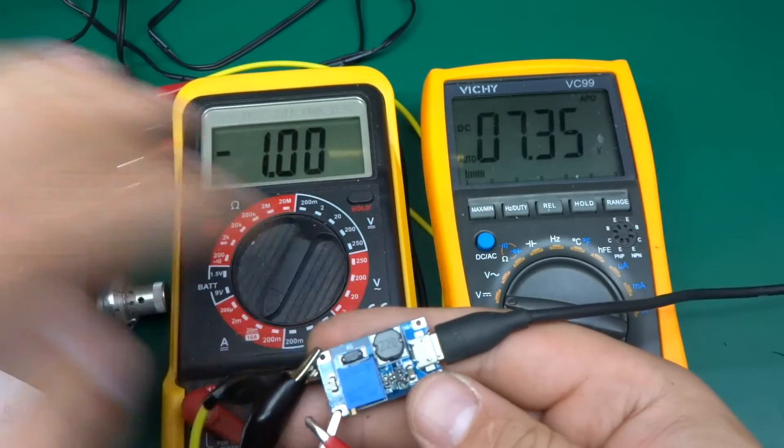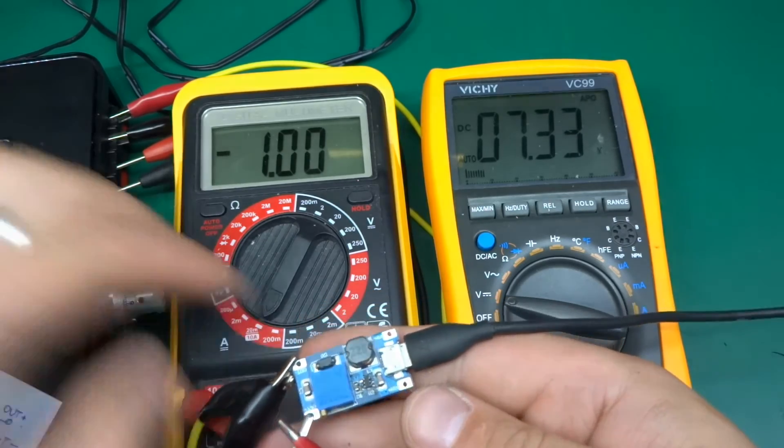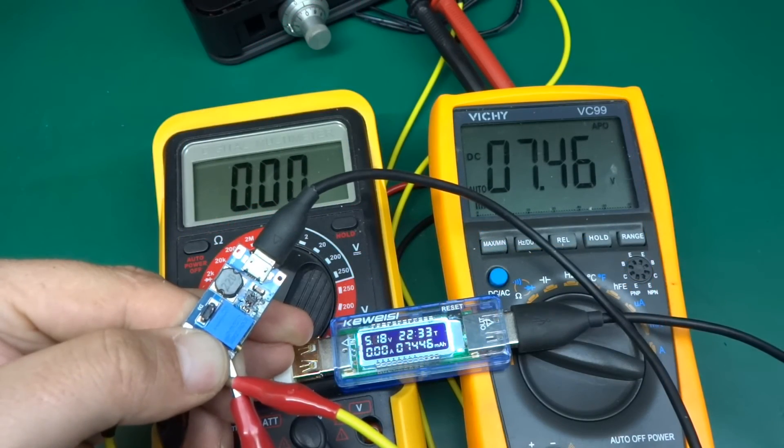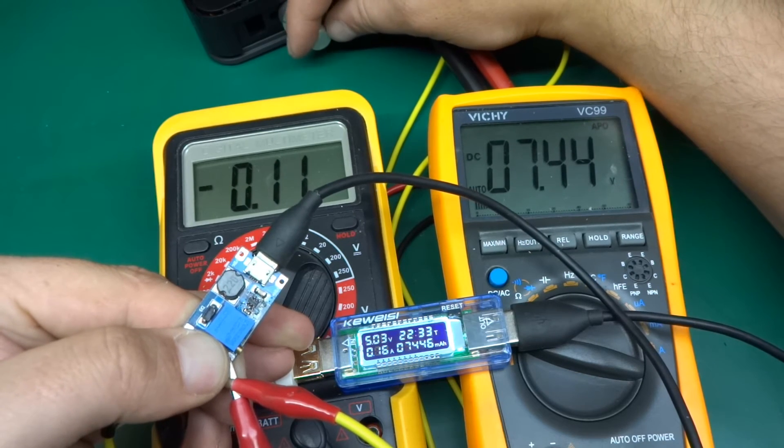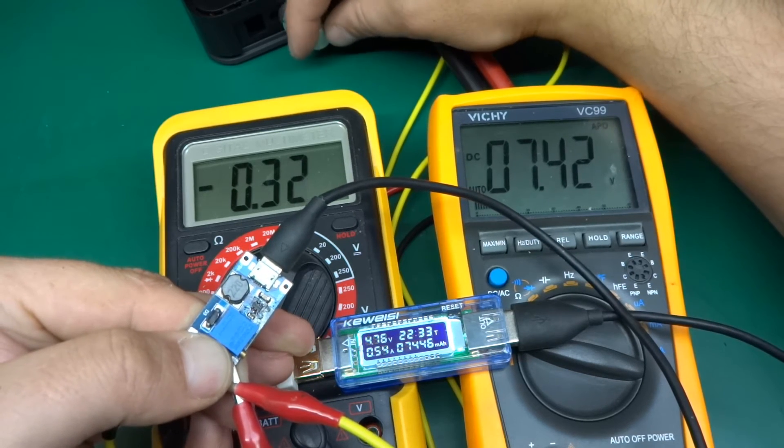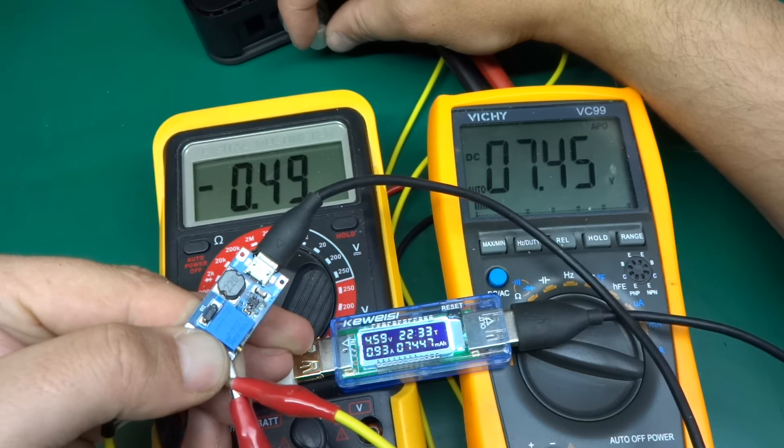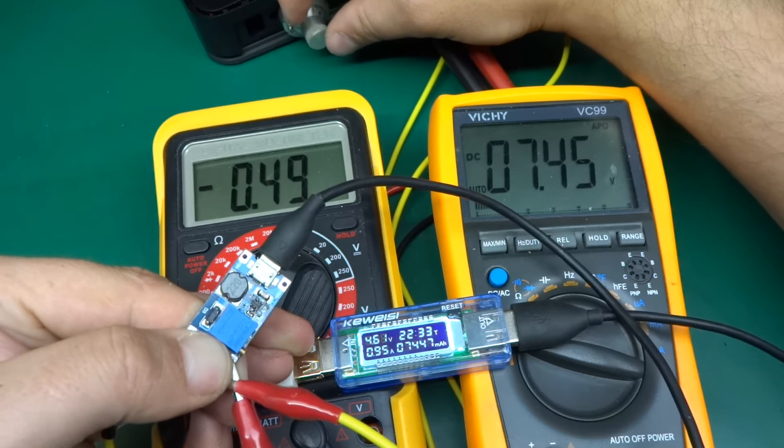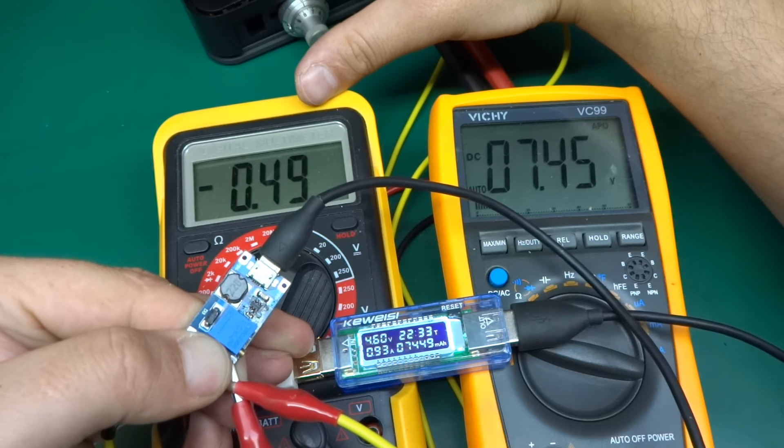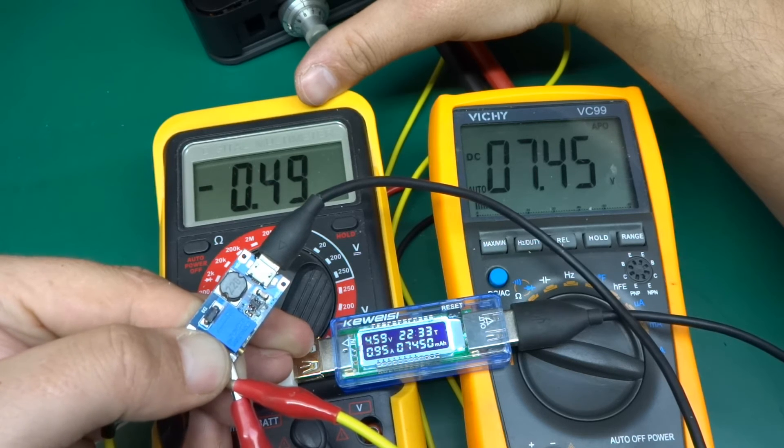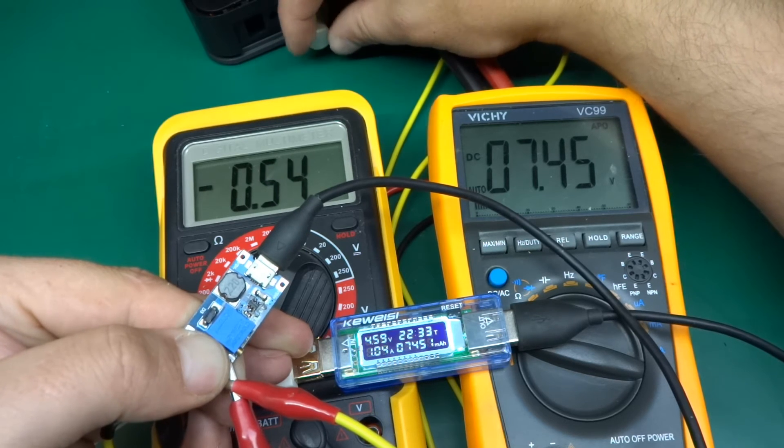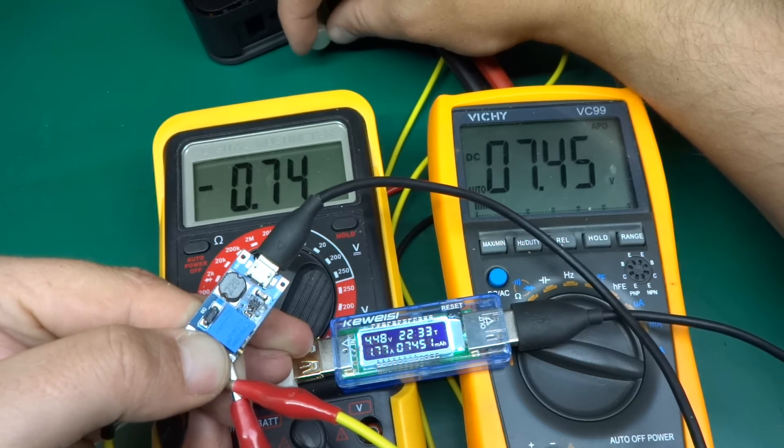So this is putting out an amp of current right now. Let's connect a USB meter on the input. That's better, we're back at it. Let's try one more time and see what's happening. Let's go up to half an amp. We're outputting half an amp but it's consuming 950 milliamp, 960 - almost twice as much. So let's see what happens when we go to an amp.